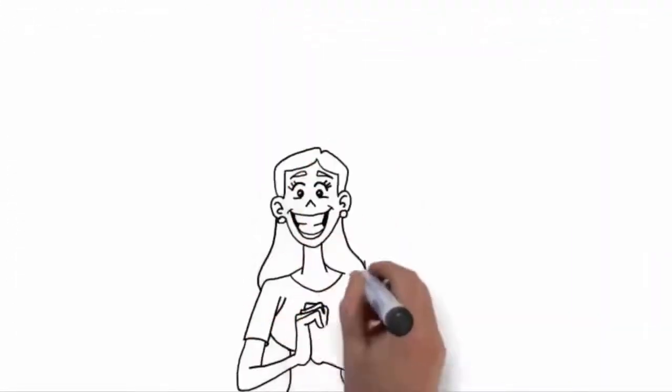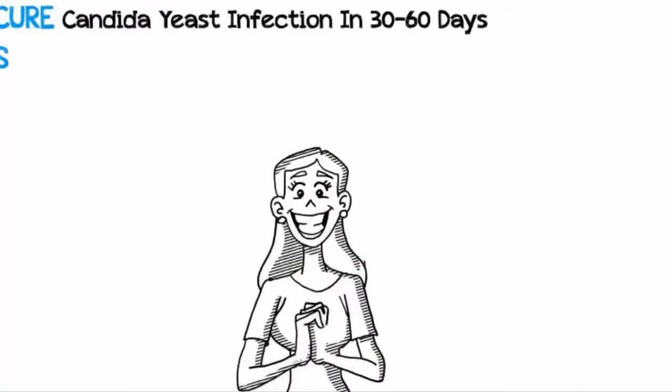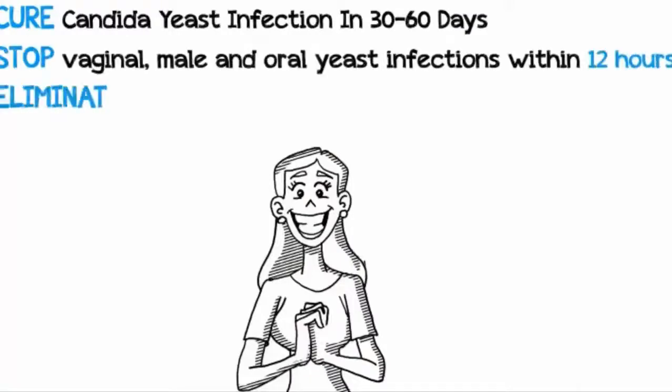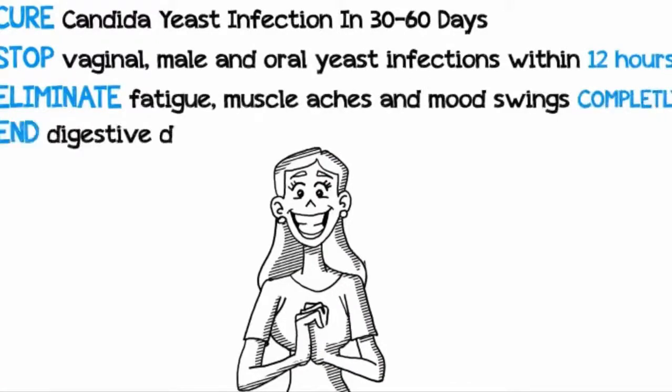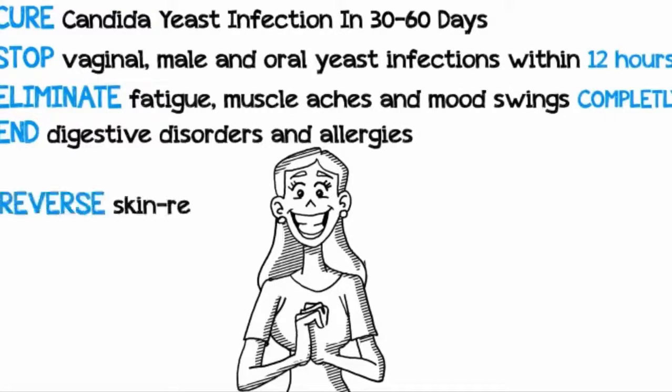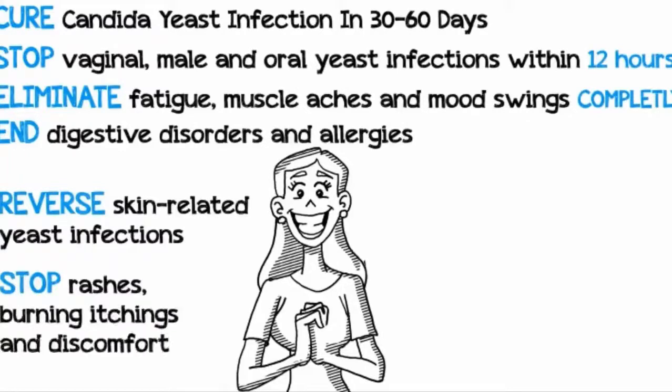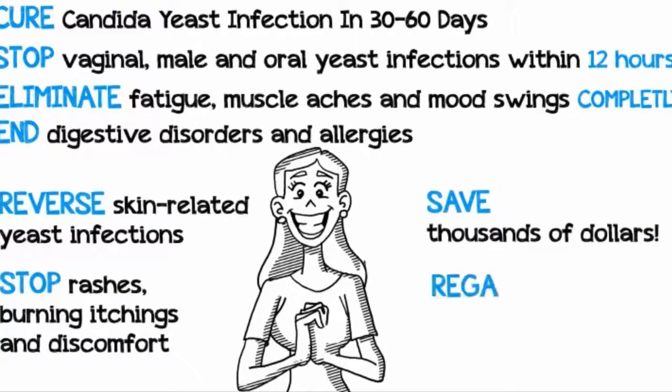So what can you expect if you embrace these three easy principles? Well, you can: 1. Permanently cure your yeast infection within 30 to 60 days. 2. Stop vaginal, male, and oral yeast infections within 12 hours. 3. Eliminate fatigue, muscle aches, and mood swings completely. 4. End digestive disorders and allergies. 5. Reverse skin related yeast infections. 6. Stop the rashes burning, itching, and discomfort. 7. Save thousands of dollars on drugs and doctor visits. 8. Regain your energy and vitality. 9. And dramatically improve your quality of life.